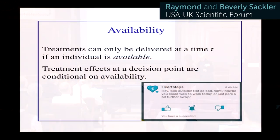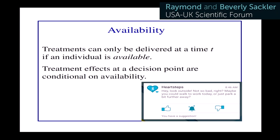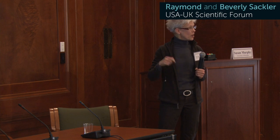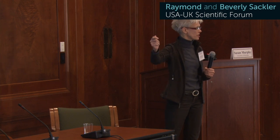This is a side comment before I go on to experimental design. The more you get into mobile health, the more you realize the issue of availability is paramount — it's because of the intrusive nature of these treatments. We can only deliver a treatment if the individual is available. In the physical activity study, if a classifier on the phone indicates you might be driving, we consider you unavailable. If you're currently walking in the Heart Steps study, we also consider you unavailable — we don't want to ping you and suggest a different kind of walk when you're already walking.